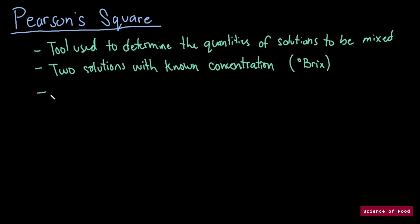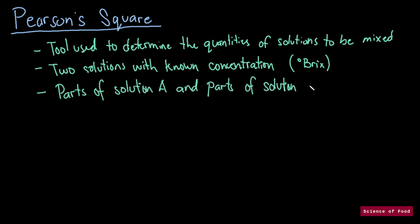When using Pearson Square, the answer that we would be getting is: how many parts of solution A do I mix with solution B? We can also determine the percentages of solution A and solution B so that we can determine a target volume. For example, if we want to mix 500 liters of juice, we can use the percentages to calculate how many liters of fruit concentrate we would be using and how much water we need to dilute it with.